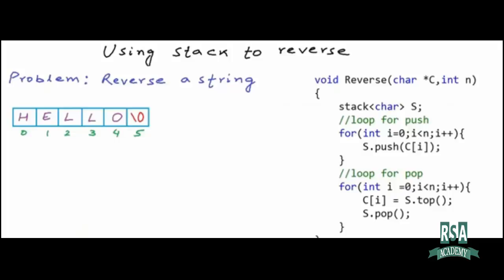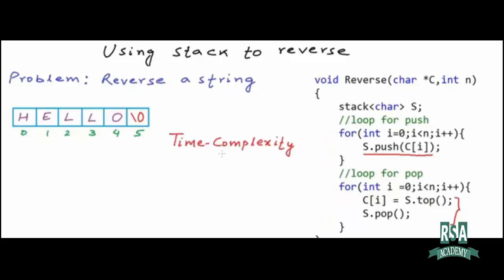Let's analyze the time complexity. All operations on a stack take constant time, so each statement within the loops takes O(1). The first loop runs n times and the second loop also runs n times. Since the loops are sequential and not nested, the overall time complexity is O(n). However, we are using extra memory for the stack — we push all n characters, so space complexity is also O(n).